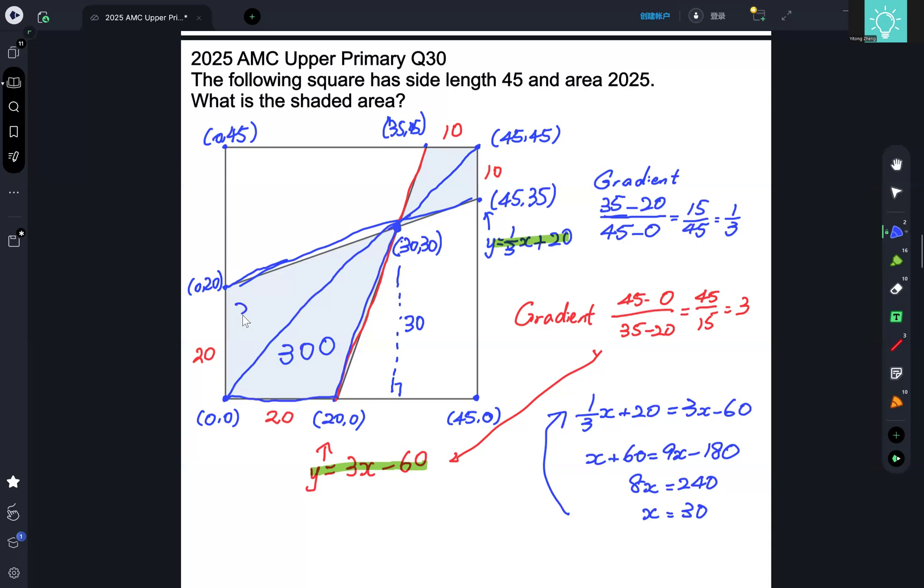And similarly, this triangle also has area 300. And because this is 30 is 30, and the side length is 45, this height will have length 15. And this triangle up the top here, the base is 10 and height is 15. So the total area of the triangle is half times 10 times 15, which is 75. And this is also 75.